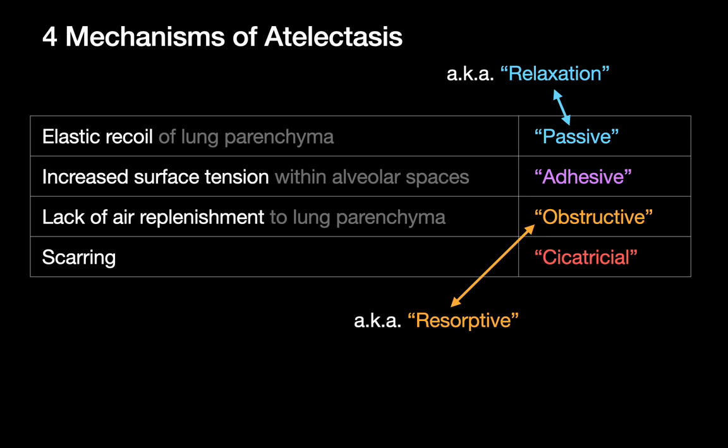We have specific names for each mechanism. Elastic recoil causing atelectasis is called passive atelectasis. Surface tension within alveolar sacs causing them to snap shut is adhesive atelectasis. Lack of air replenishment is obstructive atelectasis. Scarring causing atelectasis is cicatricial atelectasis. Note that passive atelectasis is also called relaxation atelectasis, and obstructive atelectasis is also called resorptive atelectasis — these are interchangeable synonyms.